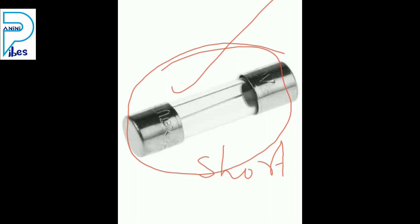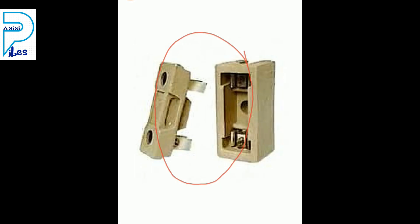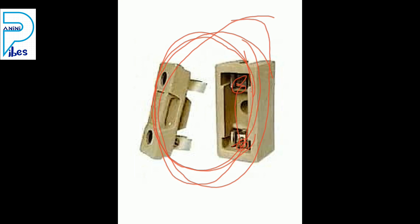Two ends of the fuse are connected with a very thin wire, inserted into the porcelain material. After inserting, the electric circuit is closed and current passes. The main thing to remember: resistance is inversely proportional to the area of cross section of the conductor. If the conductor is very thin, resistance is more; if very thick, resistance is less.